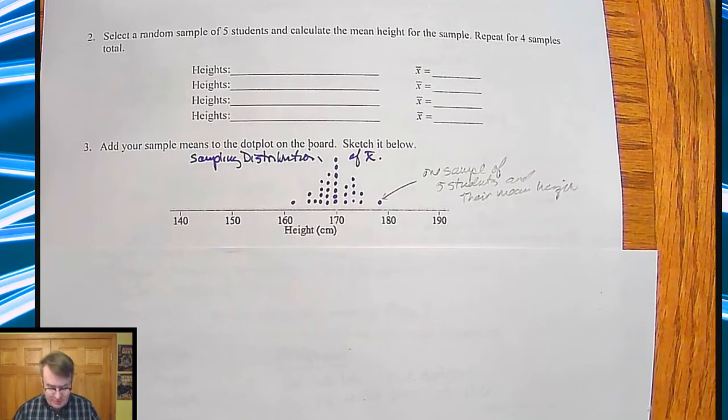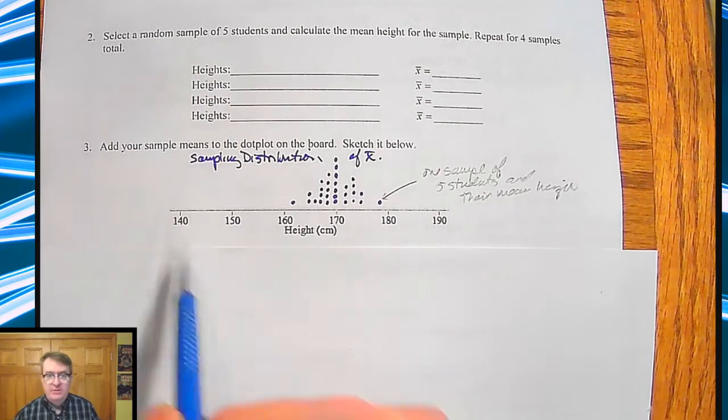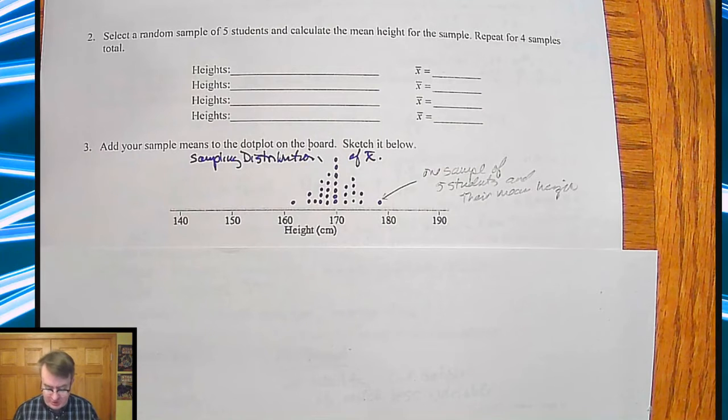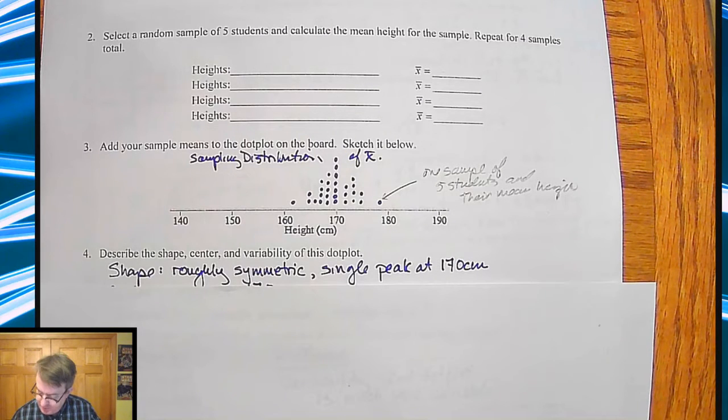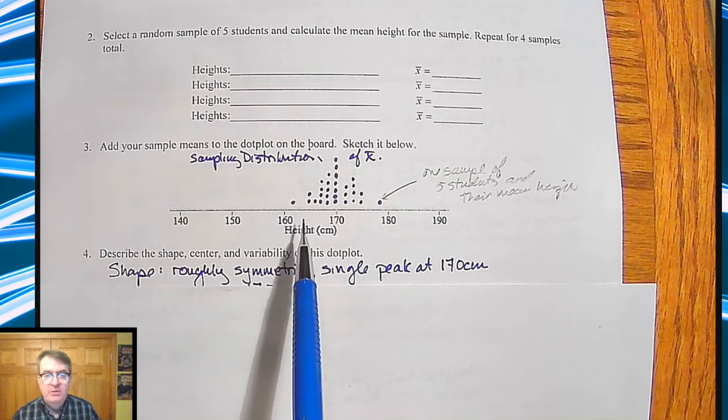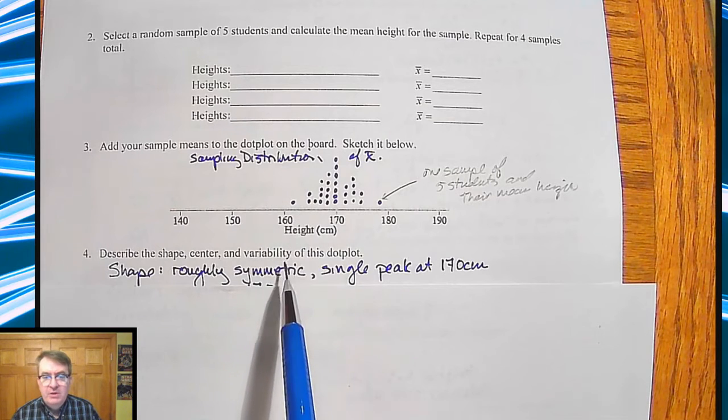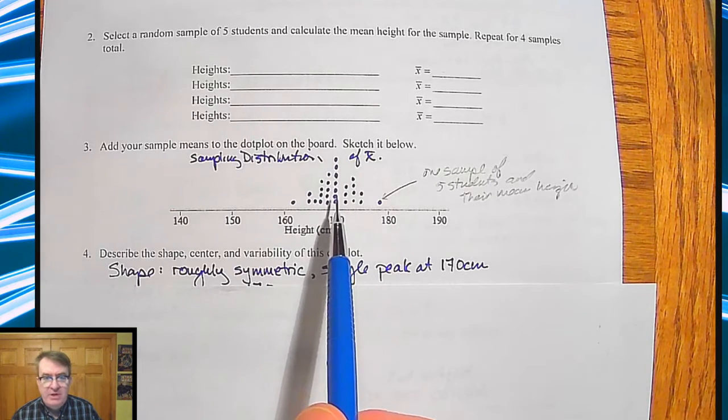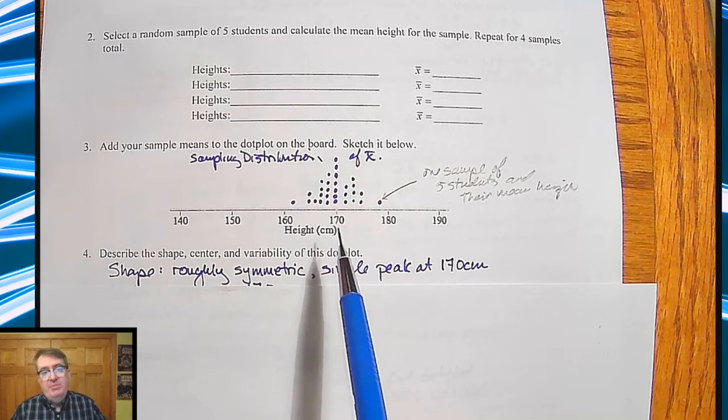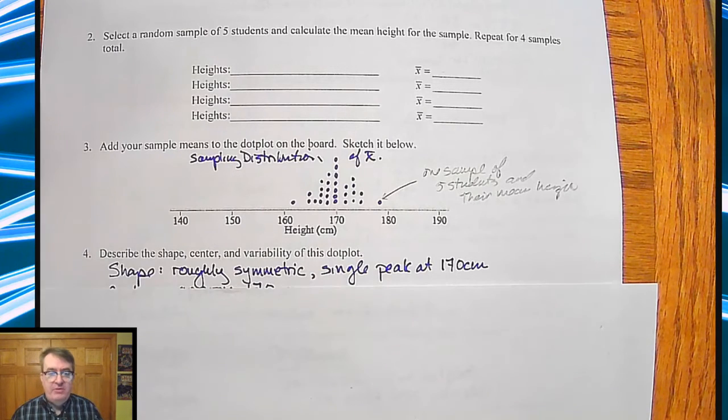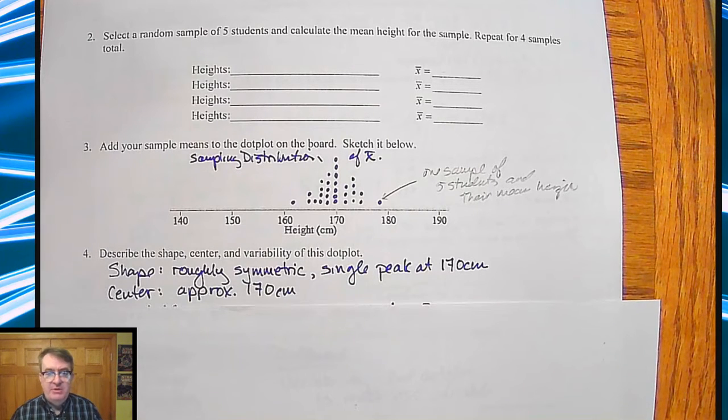So down in four, we ask you, okay, well, what are some things, you know, describe this, what's going on? And so usually, so again, remember, we're talking about shape, center, and variability. So the shape, most people say it's roughly symmetric. You've got a single peak right at 170. I don't know if we'd necessarily call it the mean yet, but you could just say the single peak because that's going to kind of indicate where your center is, obviously. So your center is going to be approximately 170 centimeters.